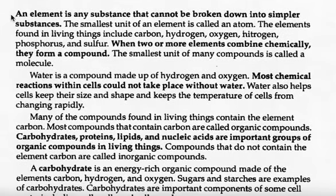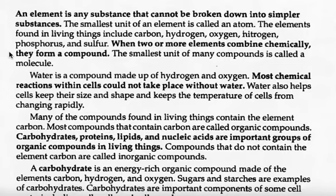As a review, an element is any substance that cannot be broken down into simpler substances. The smallest unit of an element is called an atom. The elements found in living things include carbon, hydrogen, oxygen, nitrogen, phosphorus, and sulfur. When two or more elements combine chemically, they form a compound. The smallest unit of many compounds is called a molecule.